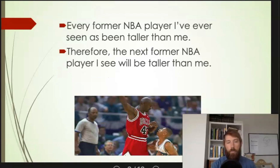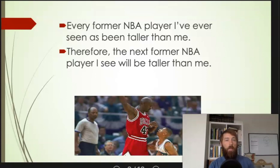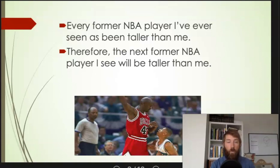This next one is a prediction, just like the college football example — it predicts what's going to happen in the future. Every former NBA player I've ever seen has been taller than me; therefore, the next one is probably going to be taller than me. I've shown a picture of Michael Jordan and Muggsy Bogues. Muggsy Bogues is a short player — actually shorter than me, and I'm six feet tall. So there are NBA players shorter than me, but they're few and far between. It's likely the next former NBA player I see will be taller than me, but it's not guaranteed. So this is an inductive argument, and predictions in general are inductive.